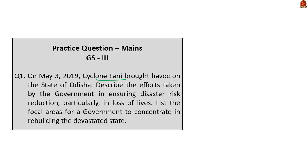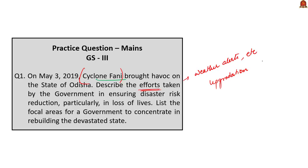Finally, let us see one mains question: On May 3, 2019, Cyclone Fani brought havoc to the state of Odisha. Describe the efforts taken by the government in ensuring disaster risk reduction, particularly in loss of lives. List the focal areas for the government to concentrate on in rebuilding the devastated state. For answering, give information about Cyclone Fani in two or three lines, then focus on describing efforts — timely weather alerts, preparedness and informed public participation — highlighting how the state upgraded itself after Cyclone 05B in 1999. For the second part, list priority areas such as restoring electricity and telecommunications, rehabilitating affected people, and upgrading technology to build resilience to extreme weather events.